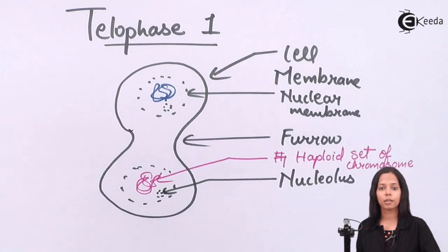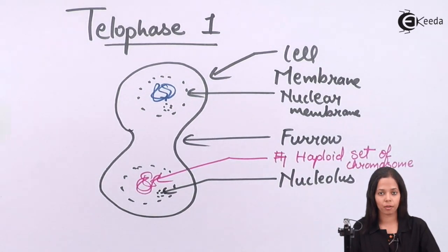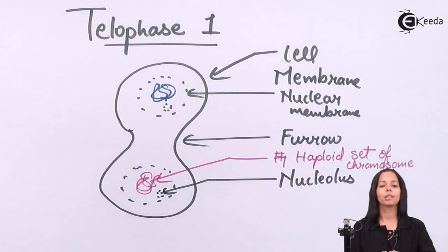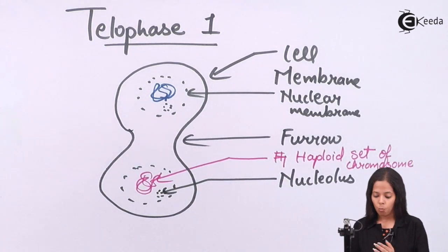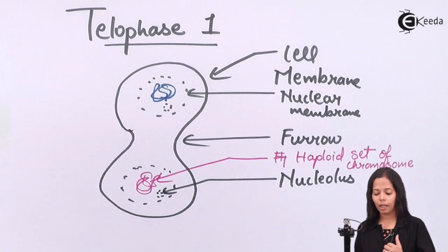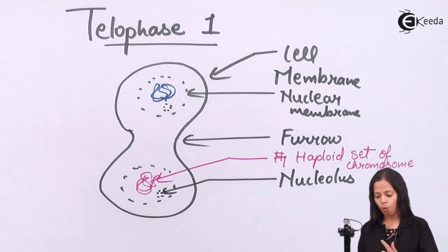In prophase, the cell membrane and nucleus disappeared. But in telophase, they reappear. One thing you can see, unlike mitosis, over here each nucleus is getting a haploid set of chromosomes.